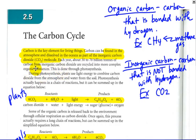To highlight a few things here, carbon is the key element for living things. It's found in the atmosphere and also dissolved in oceans as part of the inorganic carbon, carbon dioxide molecule. And it goes on to say each year, 50 to 70 billion tons of carbon from inorganic carbon are recycled into more complex organic substances. This is done through photosynthesis.